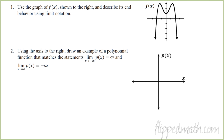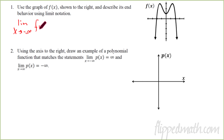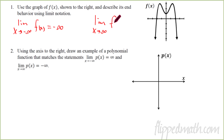Let's actually do this in practice. Example one says: use the graph shown to the right and describe its end behavior using limit notation. As X goes to negative infinity — going to the left — this function is going further down and down, eventually going all the way down. So the limit as X approaches negative infinity for F of X equals negative infinity. Now the right-hand side: the limit as X approaches positive infinity — this one is also going down forever. So the limit as X approaches infinity of F of X equals negative infinity. Notice it's the same for both because it's going down on both sides.